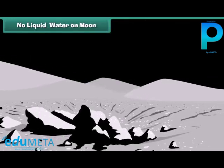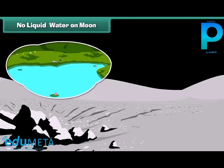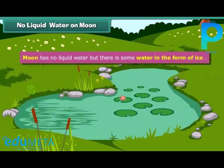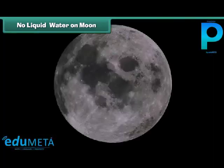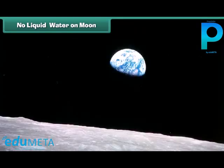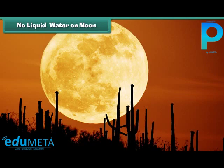Does the moon have water like our earth? There is no liquid water on the moon, but there is some water in the form of ice. Recently, a NASA spacecraft discovered nearly about 100 kilograms of ice and water vapor near the moon's south pole, and it is possible that there is more buried under the surface of the moon.